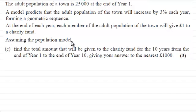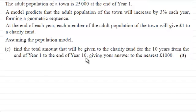Assuming the population model, in Part E we've got to find the total amount that will be given to the charity fund for the 10 years, from the end of year one to the end of year 10, giving your answer to the nearest thousand pounds, for three marks.